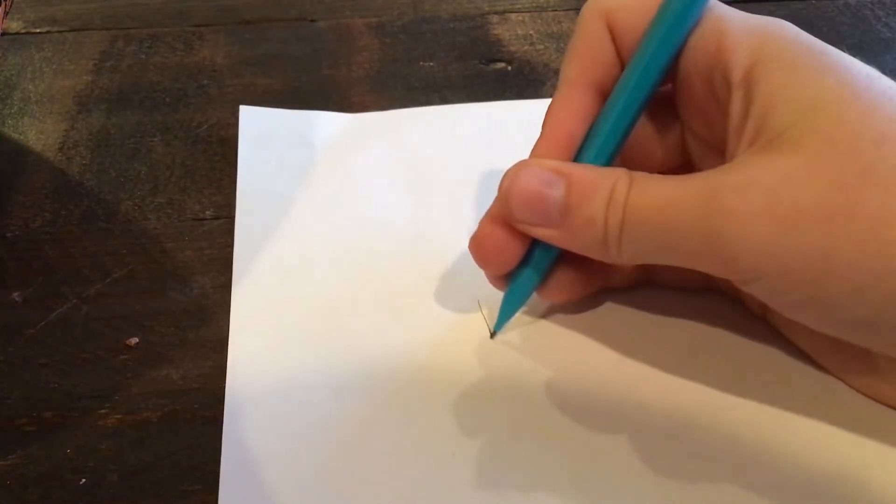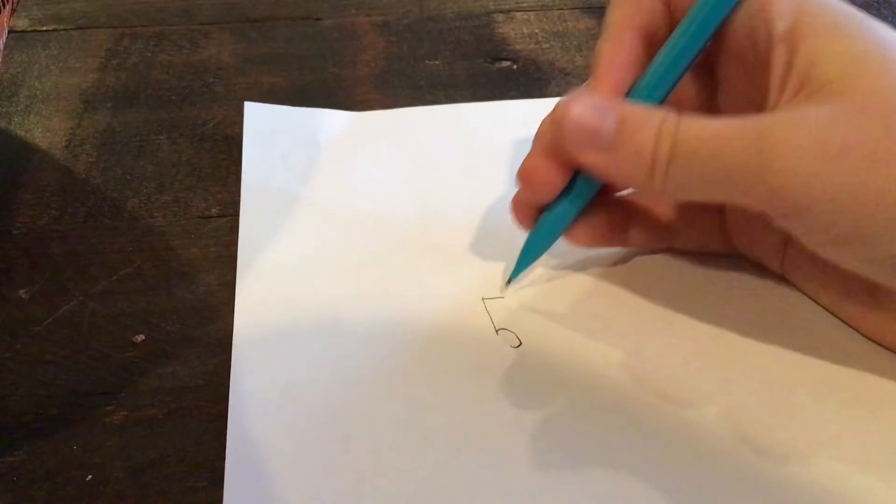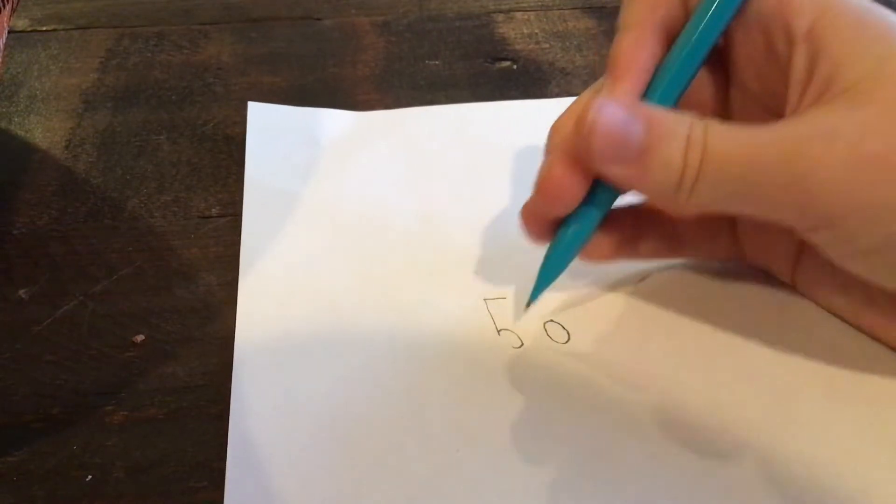So step one, you draw a 50, and then make sure the zero is like that so that it works.